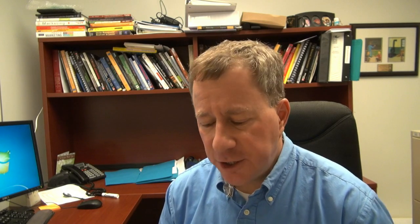First and foremost, we have to describe exactly what observation is. By definition, observation is a form of primary research that involves a process of systematically recording the behavioral patterns of people, objects, and occurrences as they are witnessed. So it's watching things as they evolve — it could be people, it could be machines, it could be natural events — as long as we can observe them.